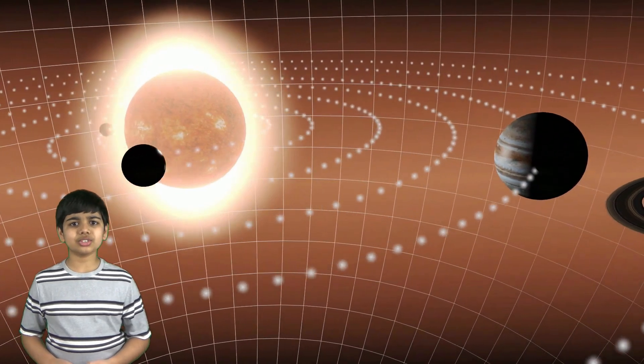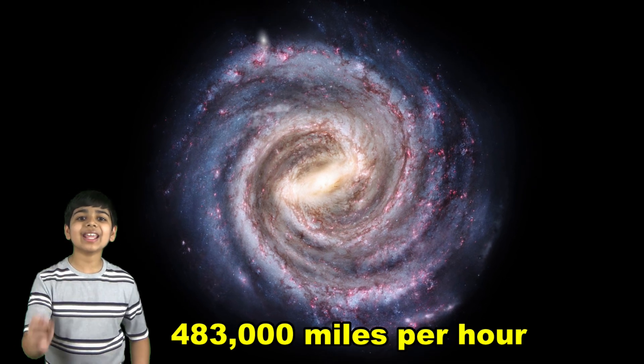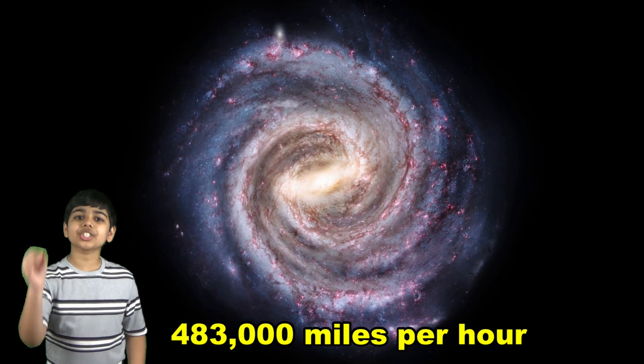So, how fast do the sun and the planets move to make it around the Milky Way in one galactic year? Well, roughly at a speed of 483,000 miles per hour. That is incredible.